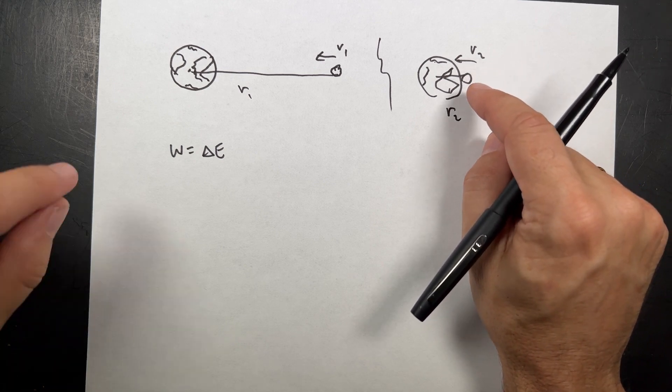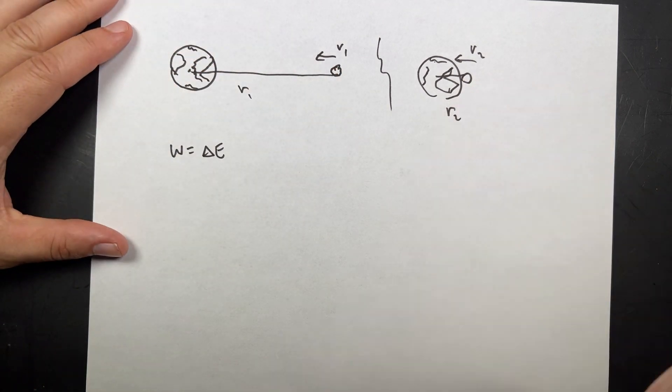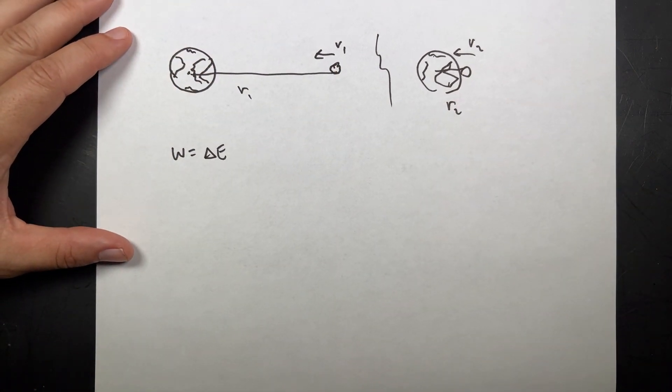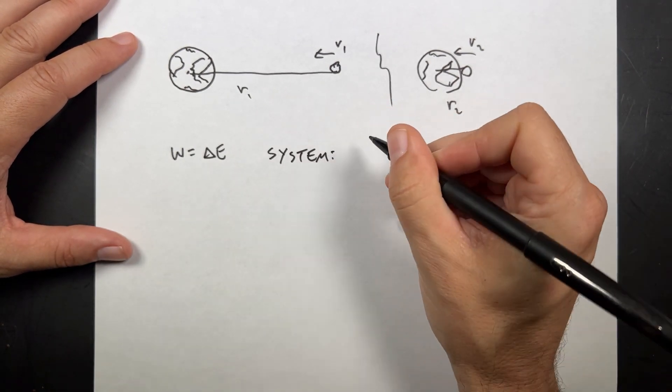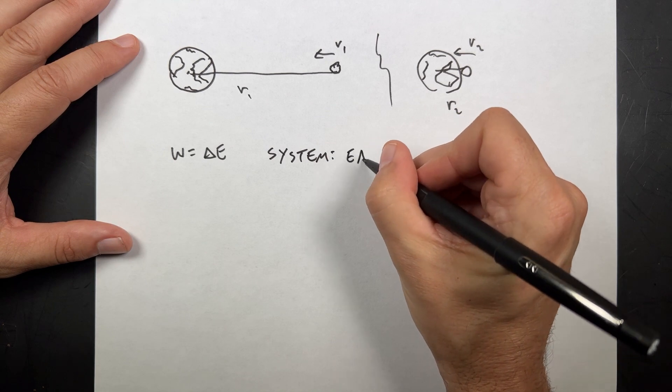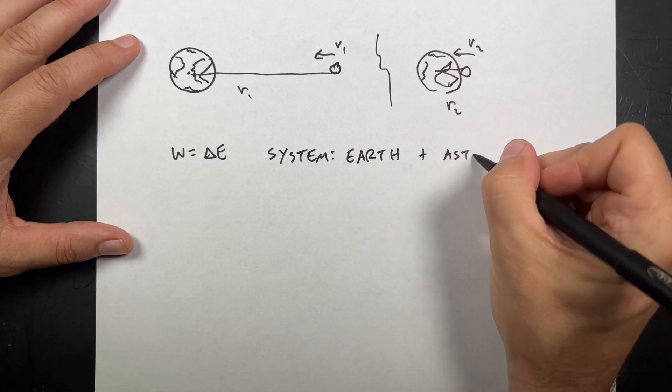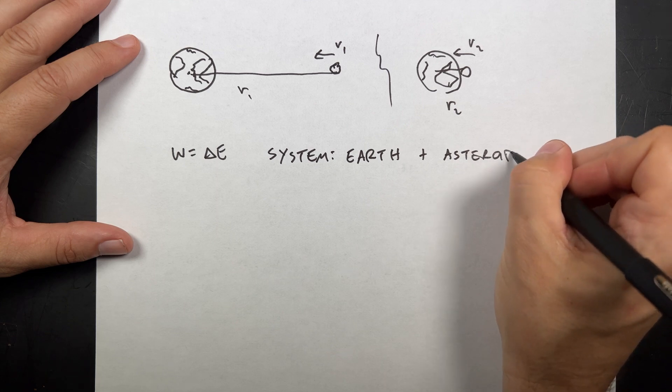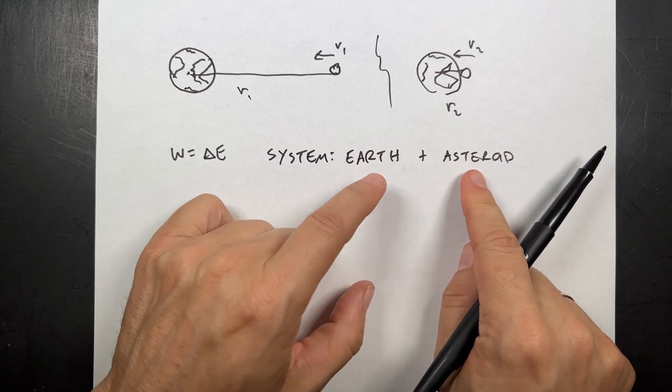So instead, I can just look at change in position, going from position one to position two. And if I want to do that, the first thing I need to do is to declare my system. So what system am I going to look at work and energy for? And I'm going to say the system of the Earth plus the asteroid.